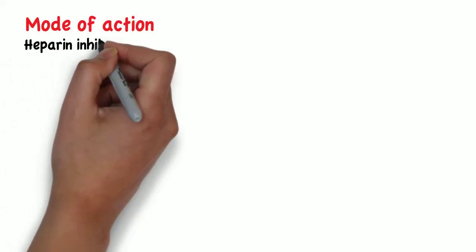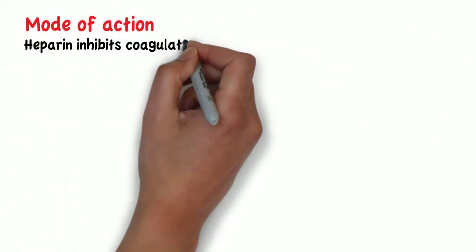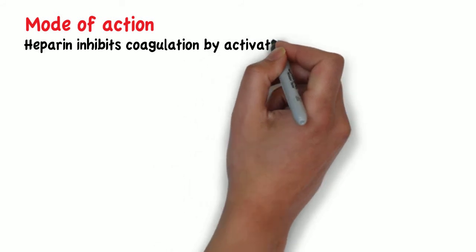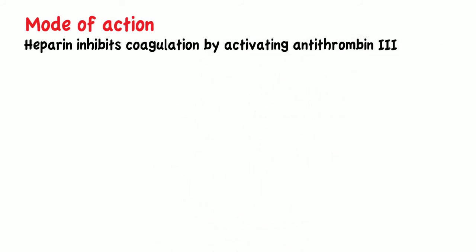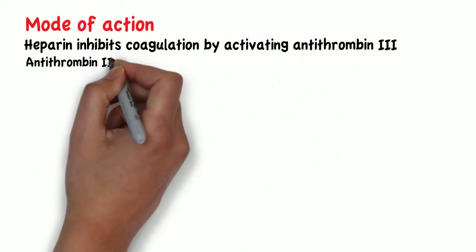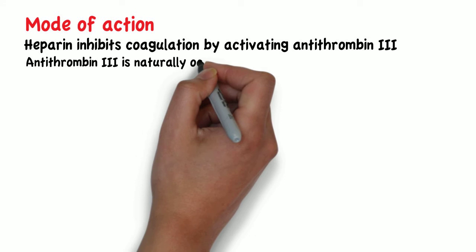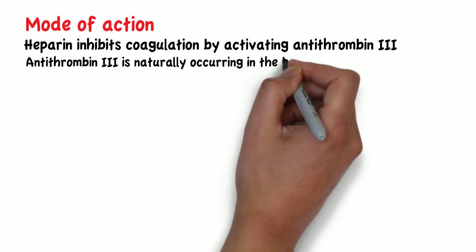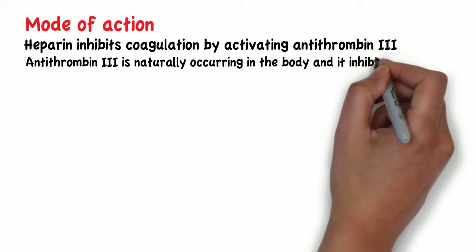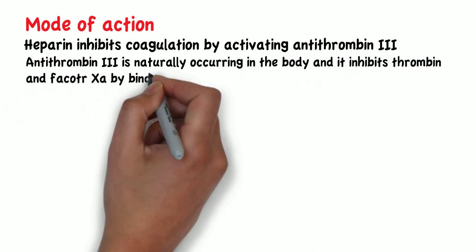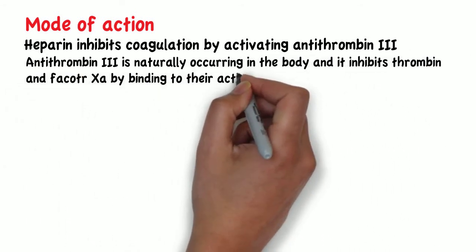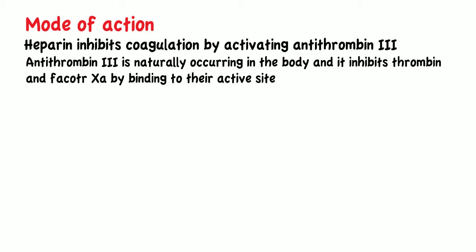Heparin inhibits coagulation by activating antithrombin-3. Antithrombin-3 is naturally occurring in the body, and it inhibits thrombin and factor Xa by binding to their active site.